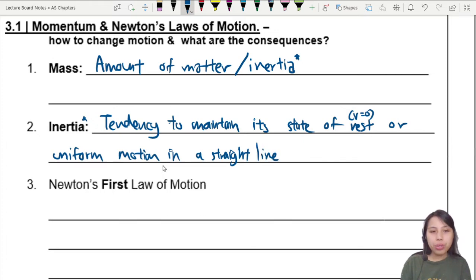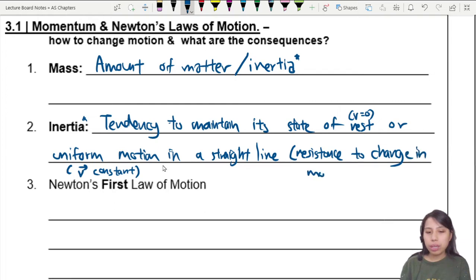What is inertia? Inertia is a term we use as a tendency for something to maintain its motion. It's a tendency to maintain its state of rest, or uniform motion in a straight line. Which means uniform motion in a straight line, also known as the velocity, which is a vector, cannot change direction, is constant.